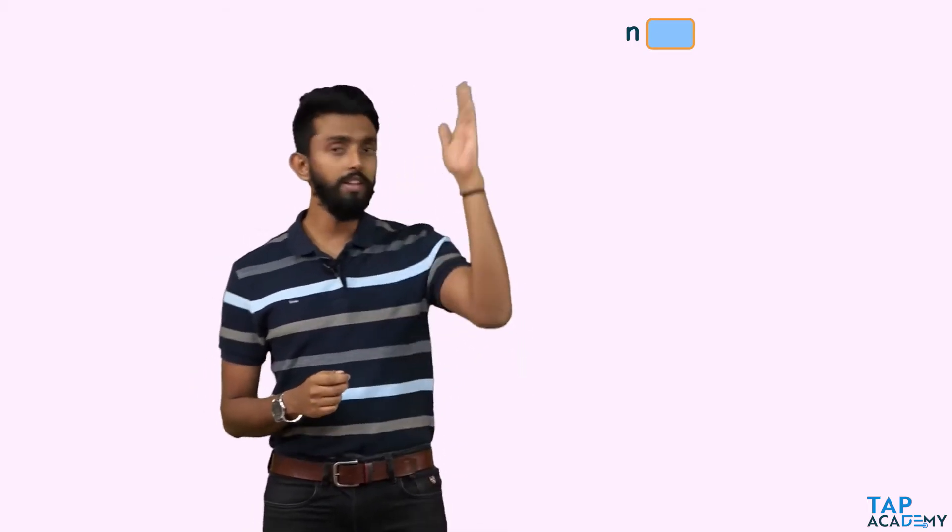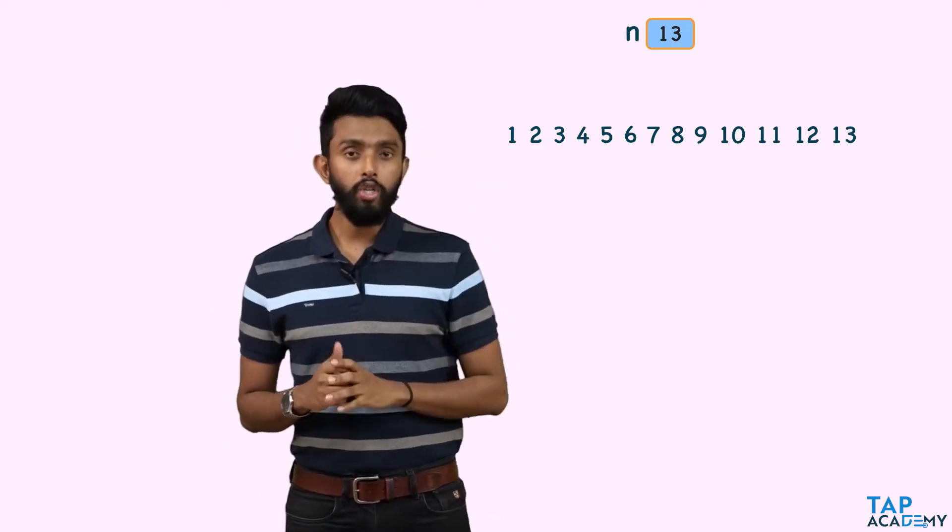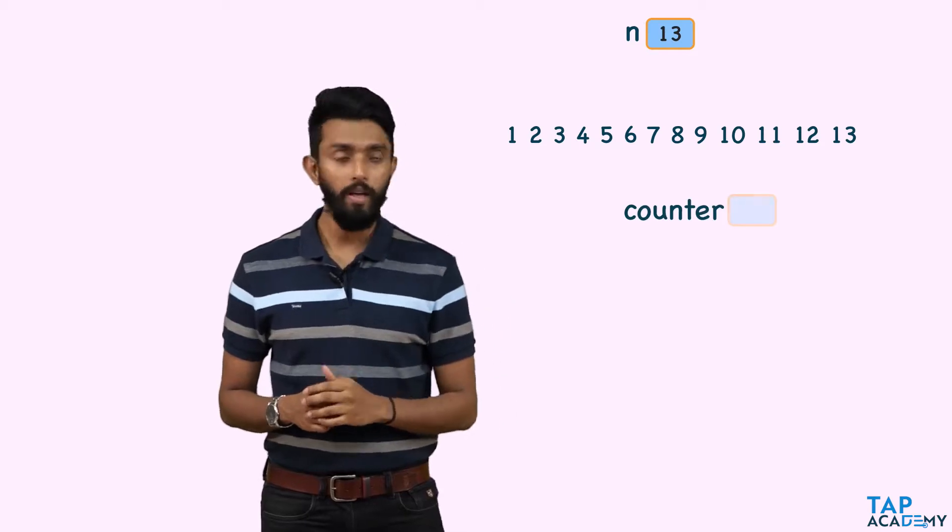How does one decide that a number is lucky or unlucky? Very simple. If n is 13, I start from 1 to 13 — I have all these numbers. In the question, you will also have a variable called counter, and the initial value of the counter variable is always going to be 2.